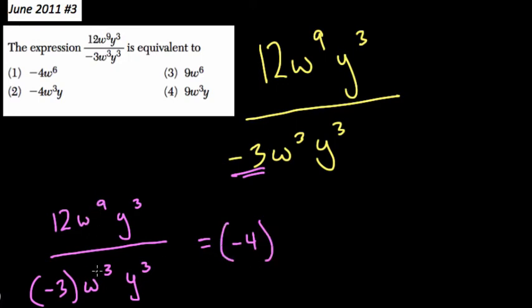W to the 9 over w to the 3. Well, we have the same base, right? The base is w. We're dividing, so you subtract the exponents.